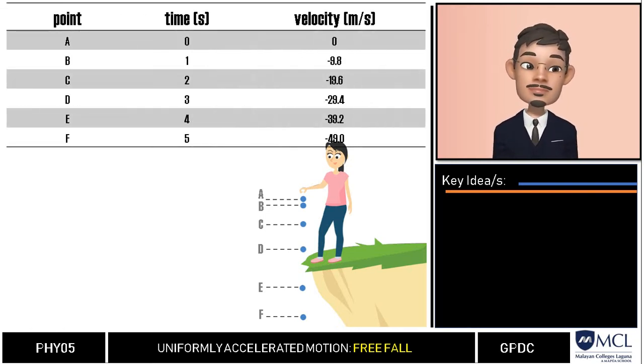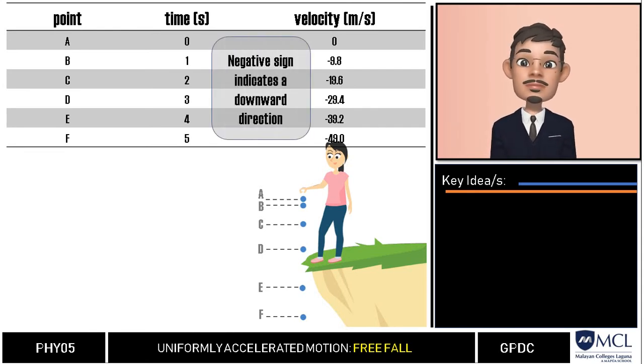What do you notice about the data presented in the table? First we notice that the figures have negative sign. This indicates a downward direction or a negative direction. Similarly, when something is going up it is a positive direction. We have discussed that already in our vectors.